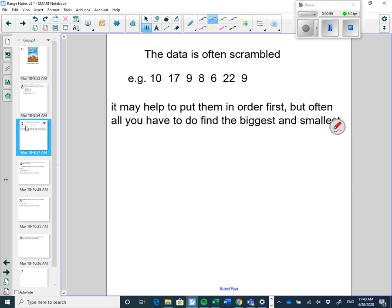The data is often scrambled like this and it may help to put them in order first. Often all you have to do is find the biggest and smallest. So in this case here the smallest would be 6 and the biggest would be 22. So it would be just 22 minus 6. But if you have to find the median, the median is the one in the middle, it doesn't hurt to have put them in order.